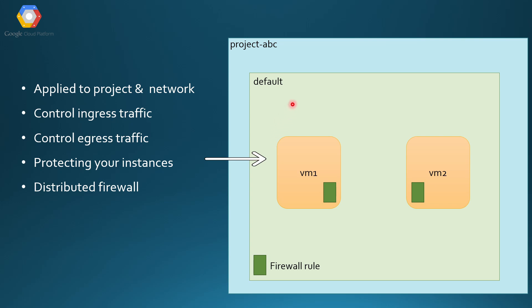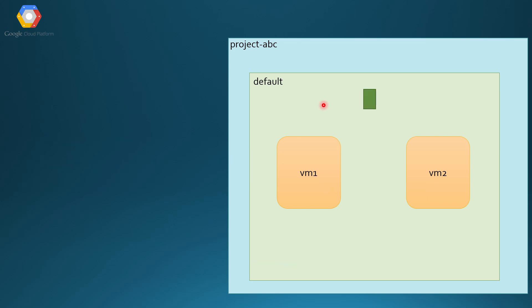Though firewall rules are applied at a network level, they are distributed in nature because you can apply a firewall rule specifically to a VM. Most importantly, firewall rules in GCP are global — it's because your VPC is global and you can span two regions. That's why your firewall rules are also global, so a firewall rule can be applied to all the instances.